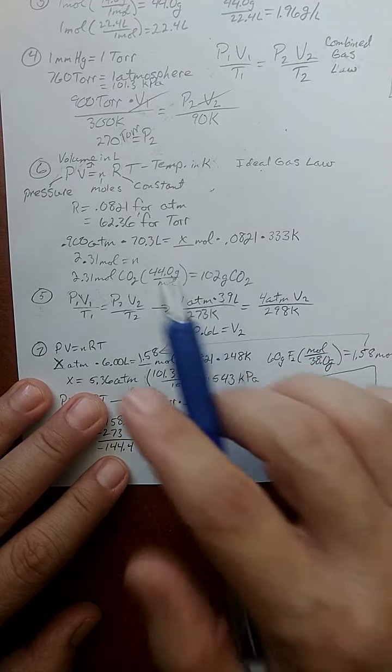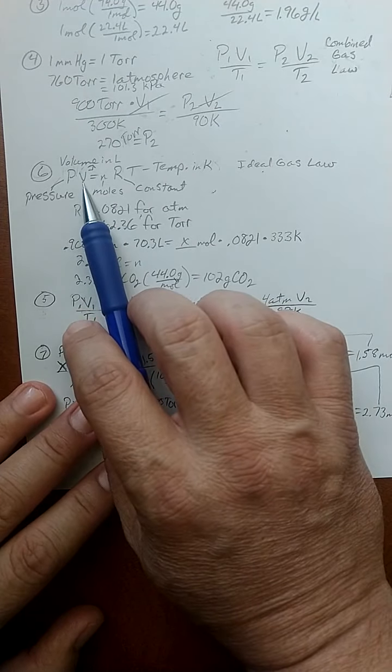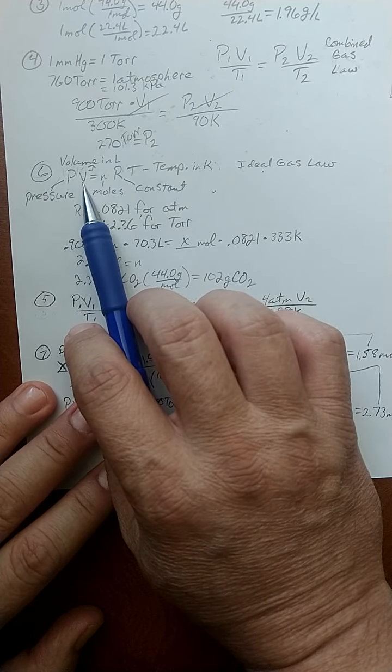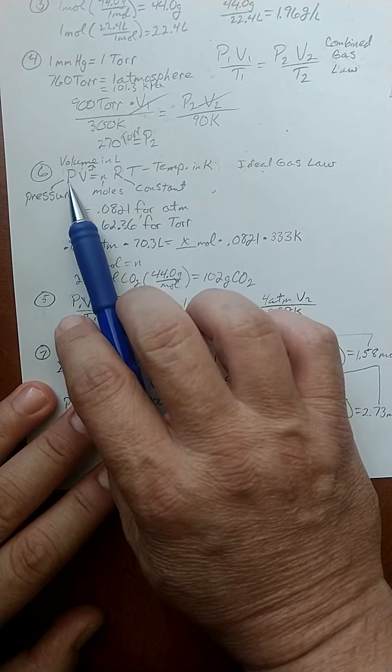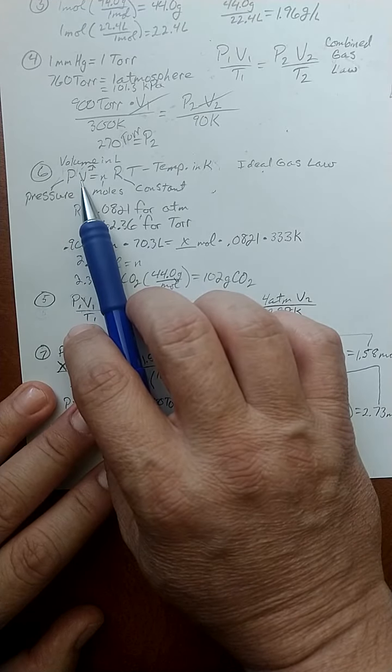Number six. Here's our new formula. This is for when the situations don't change. This is a one-stop shop. There's only one pressure, one volume, etc.